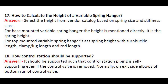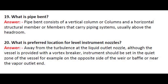Question 18: How should a control station be supported? Answer: It should be supported such that the control station piping is self-supporting even if the control valve is removed. Normally, support is placed on the exit side elbows of the bottom run of the control valve.